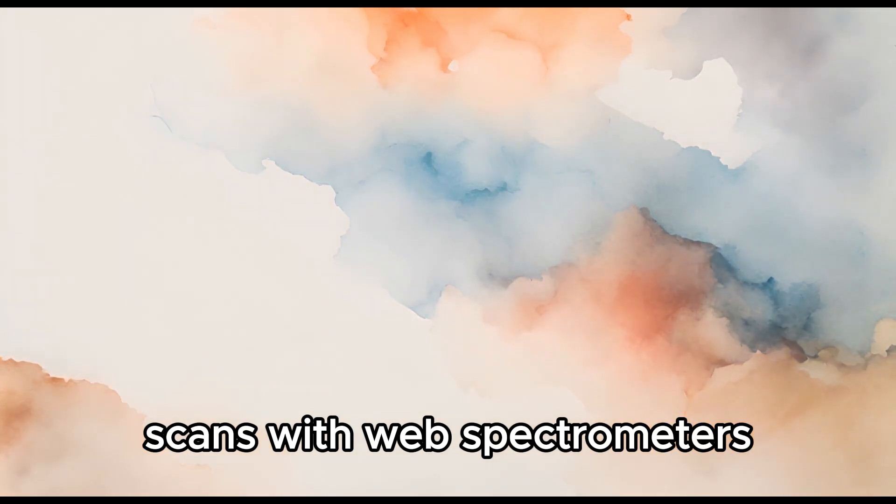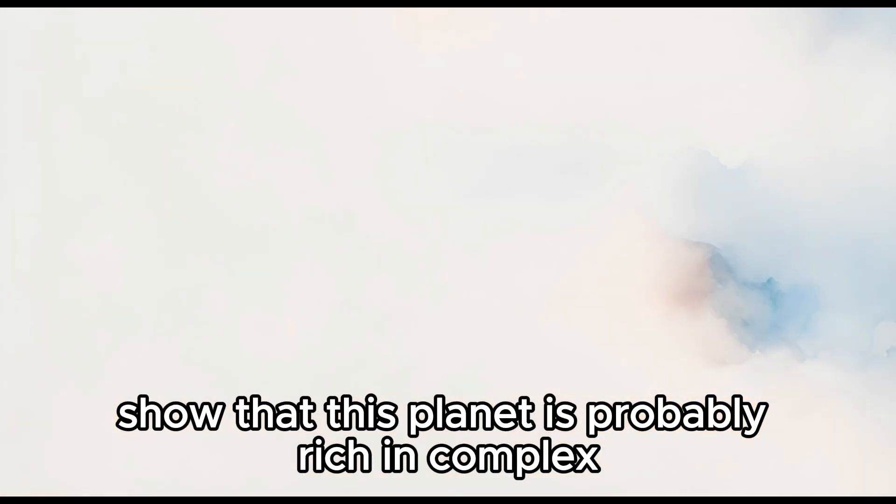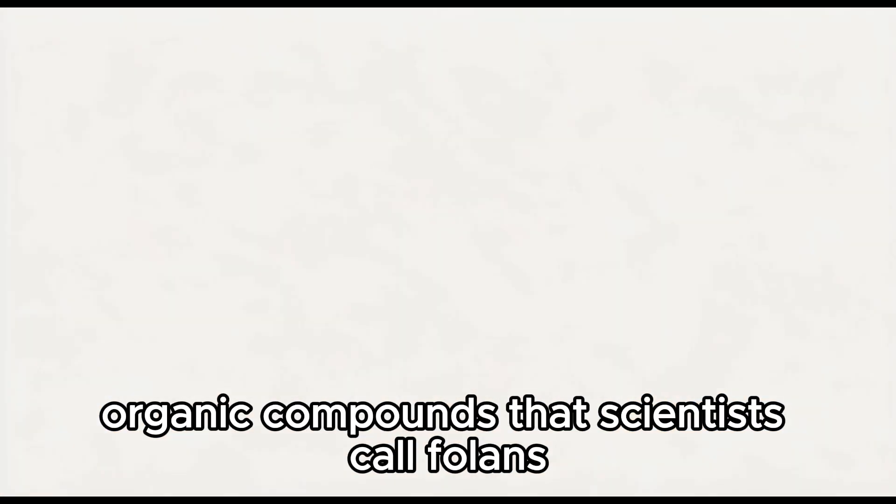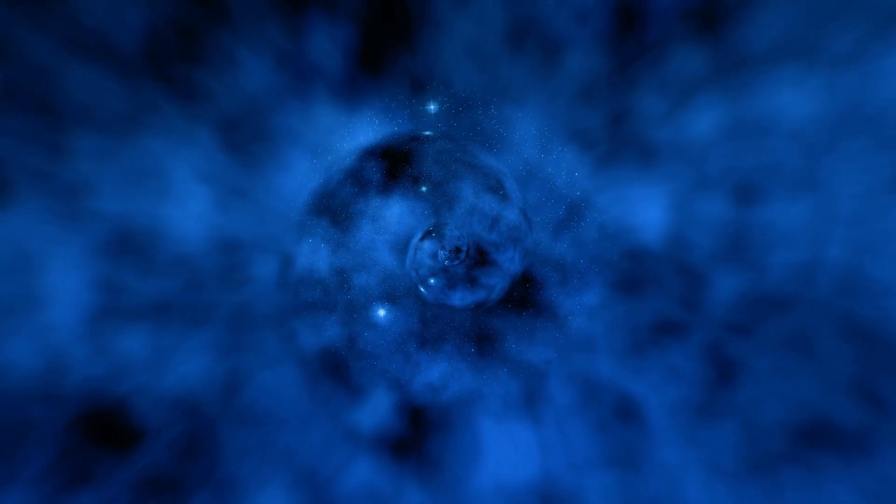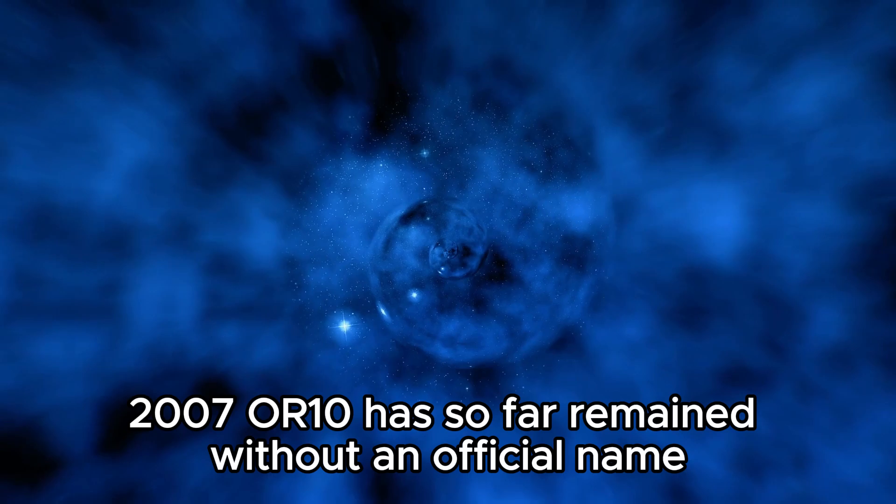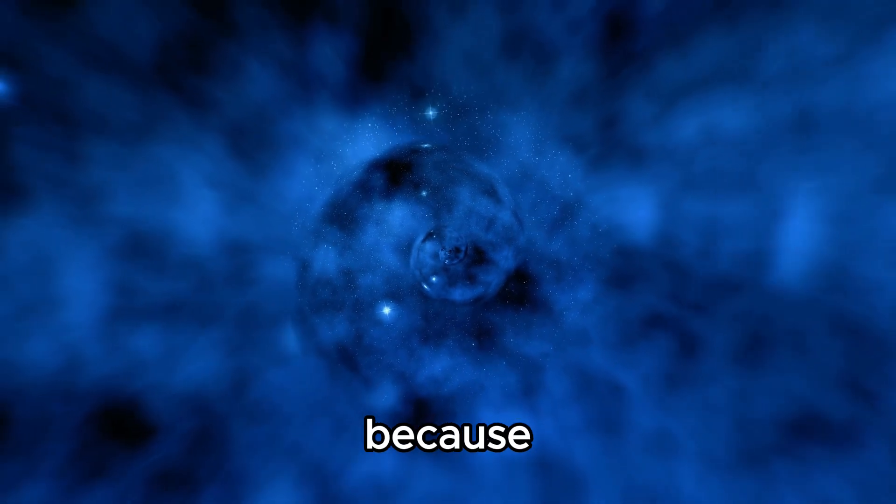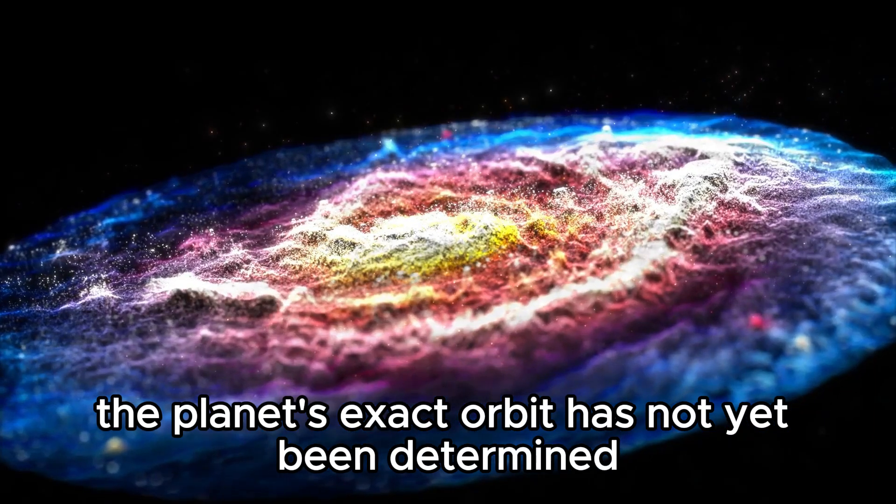Scans with Webb spectrometers show that this planet is probably rich in complex organic compounds that scientists call tholins. Despite its considerable size and peculiarity, 2007 OR10 has so far remained without an official name because the planet's exact orbit has not yet been determined.